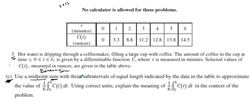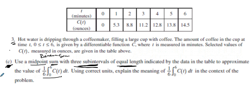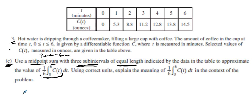We're asked to find a Riemann sum with three subintervals of equal length, indicated by the data in the table. We want to find the integral from 0 to 6 of c(t), then explain its meaning in context. Before doing the calculation, let's think about what this expression means. It's important to understand what your integrand is — a rate or a value. Looking at the units, it's ounces, not ounces per minute, so we're integrating an amount.